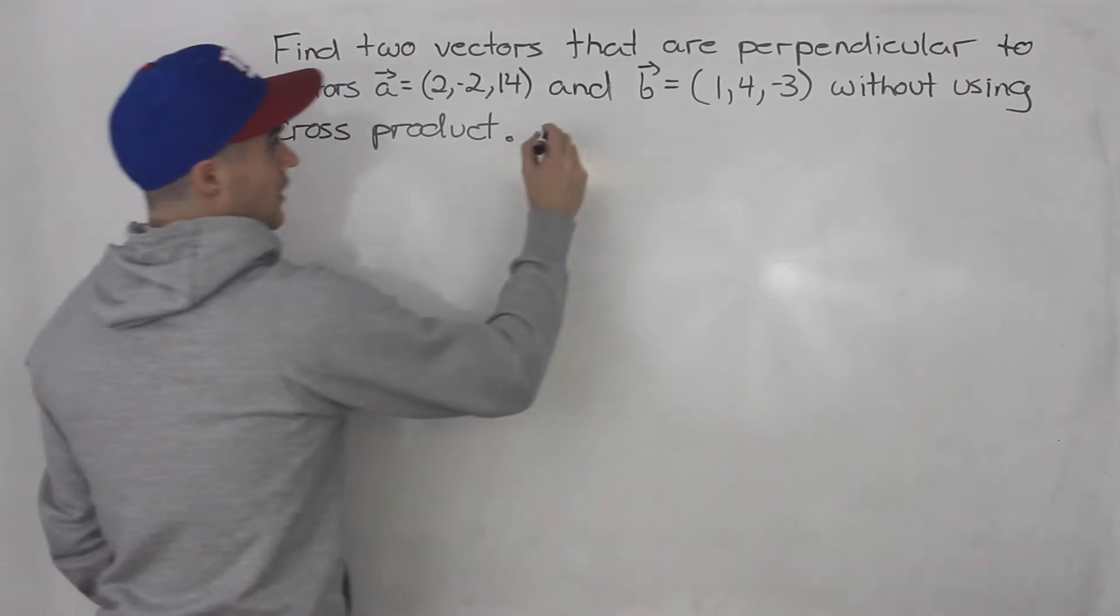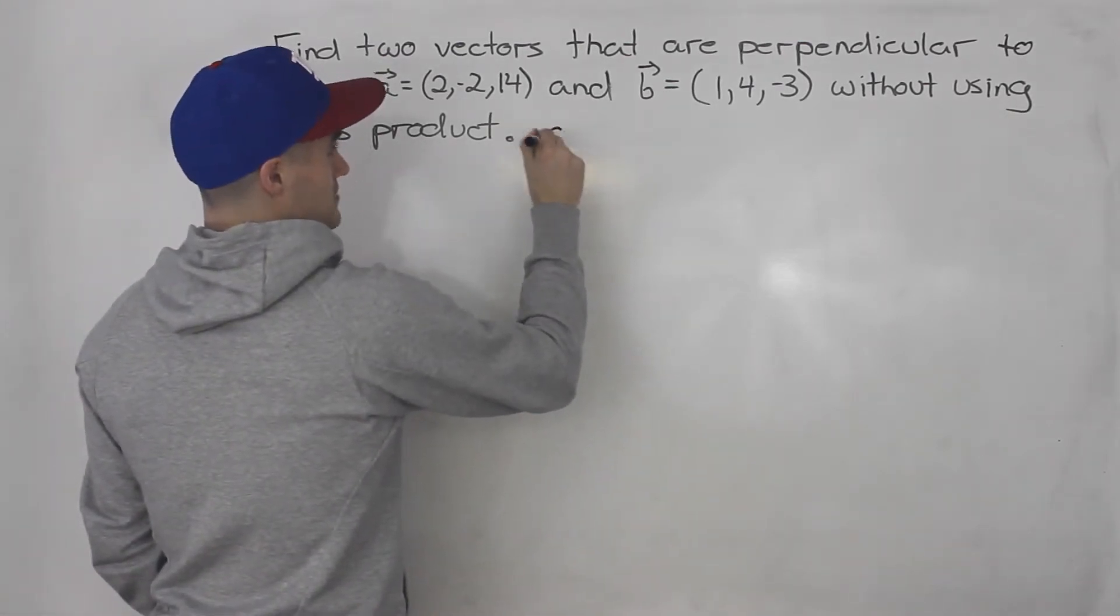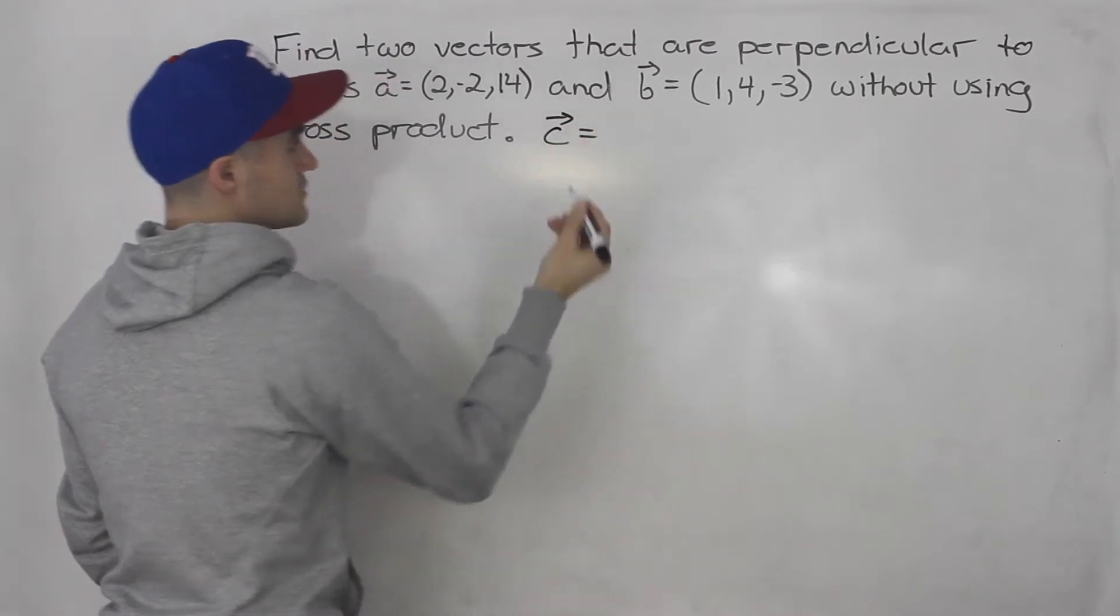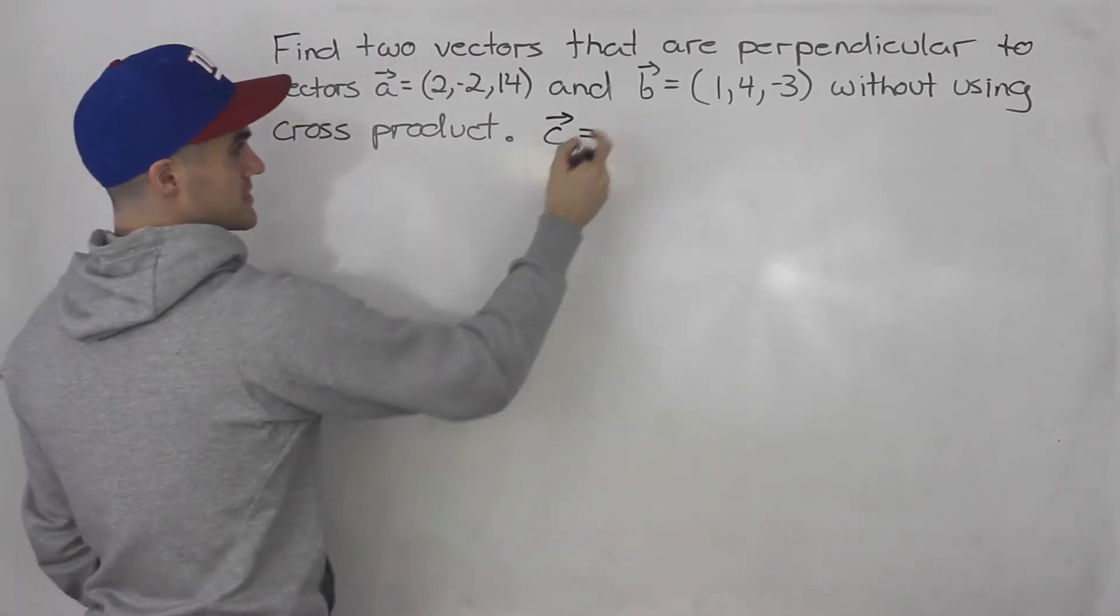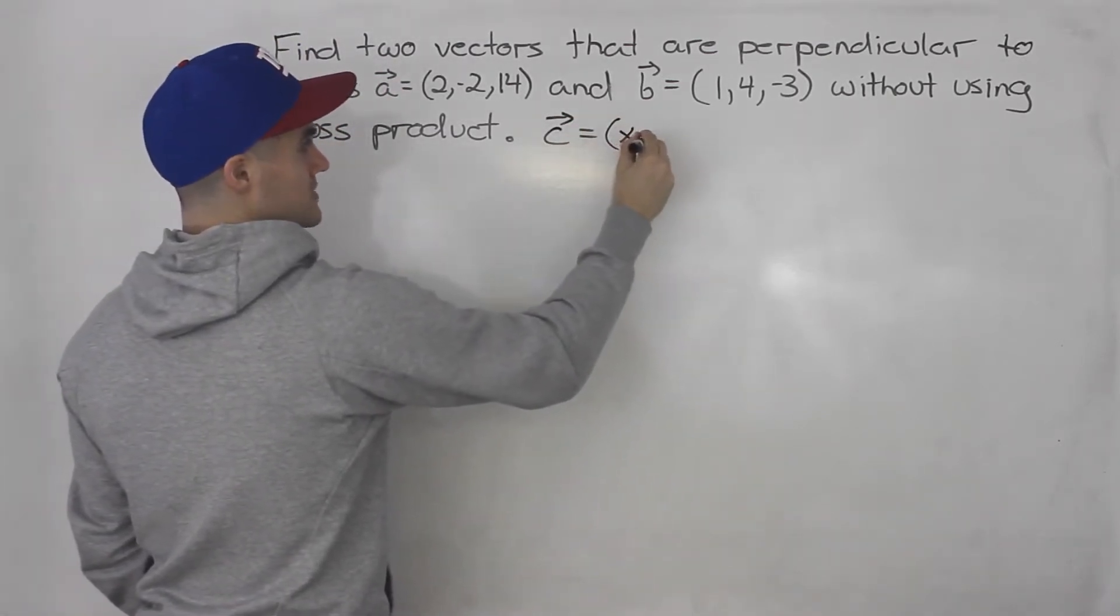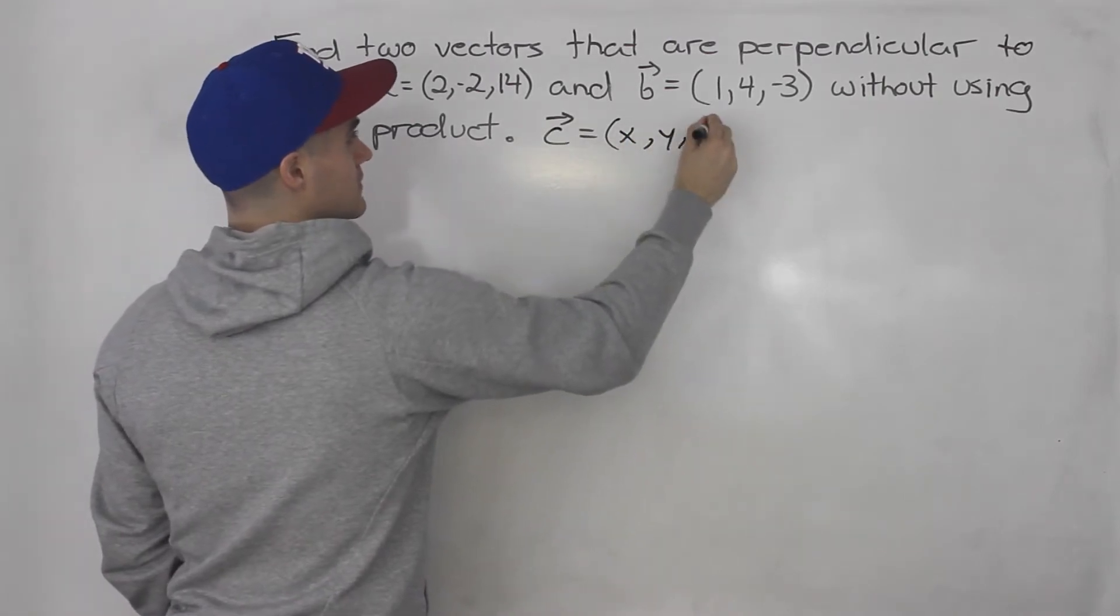So let's just start off by finding one vector that is perpendicular to both of these using the dot product. And let's call it vector C. Let's say it has components X, Y, Z.